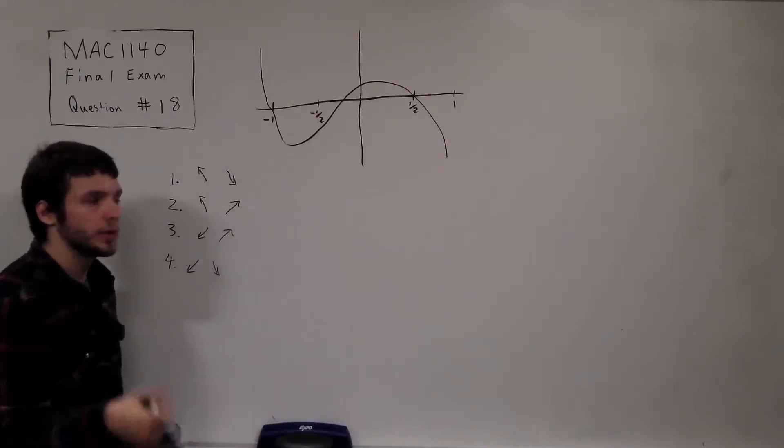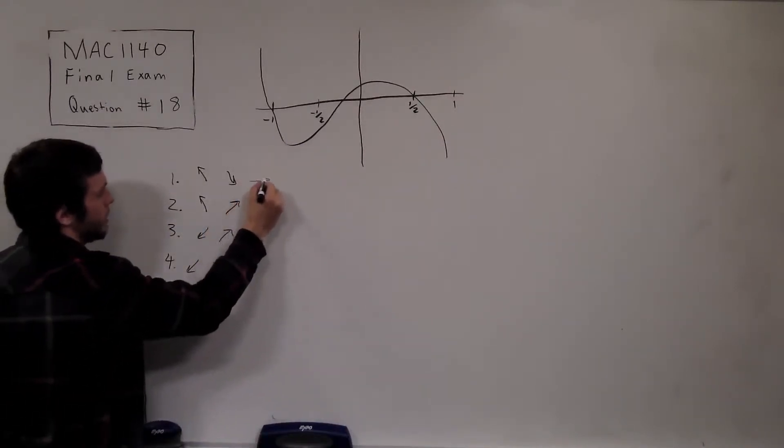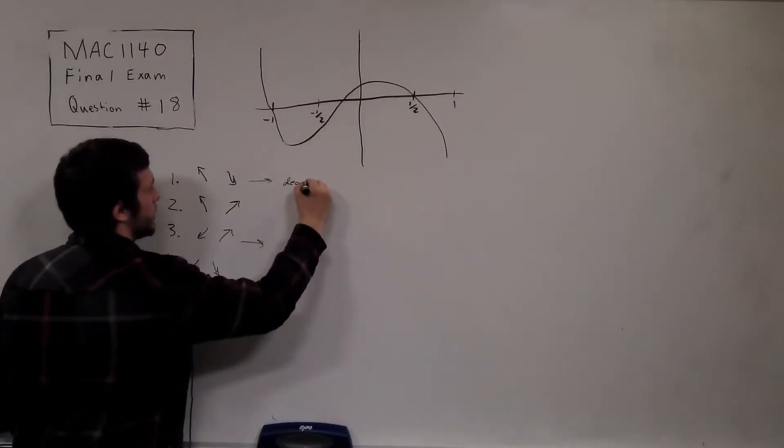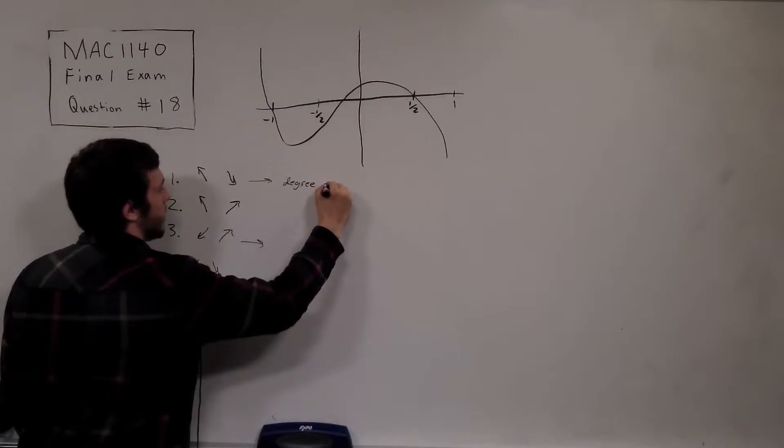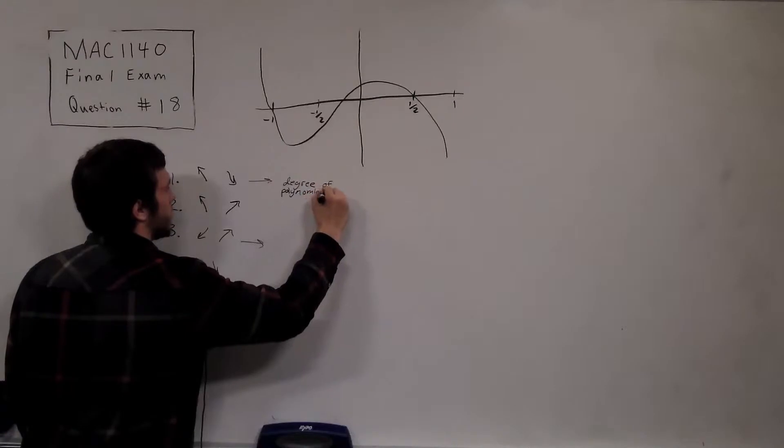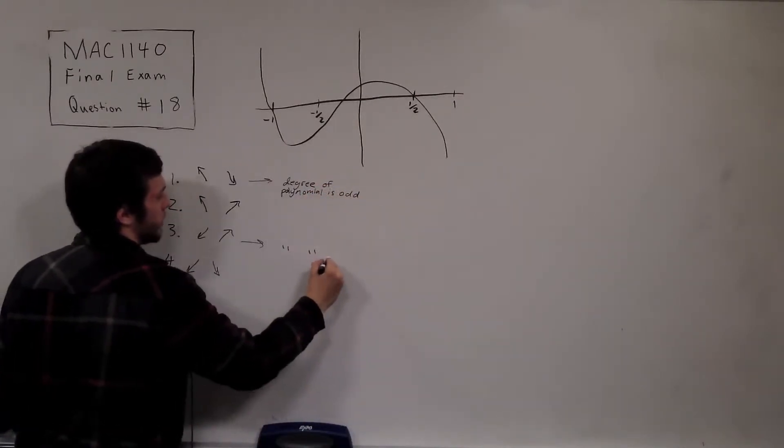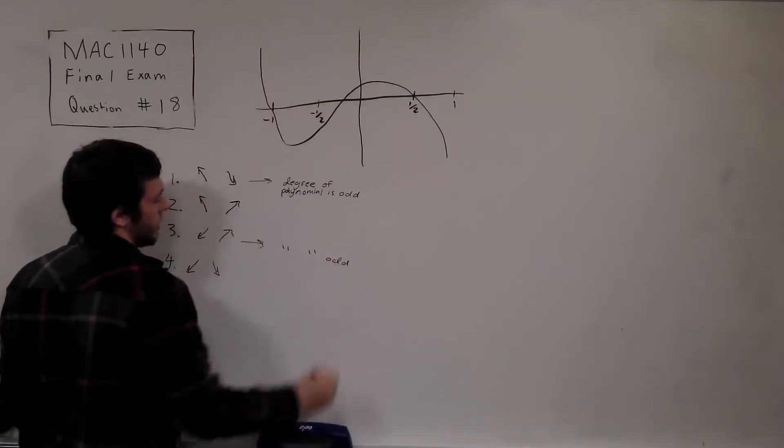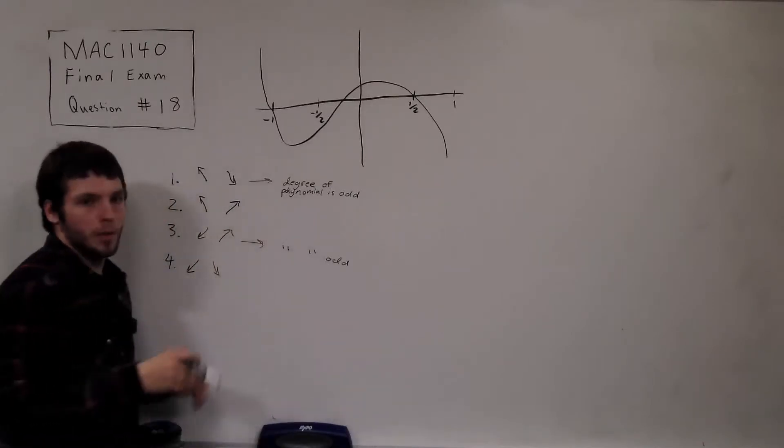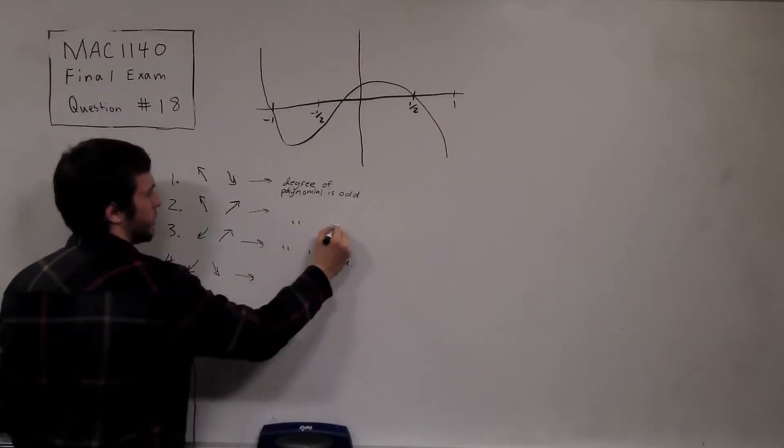That means that the degree of the polynomial is odd. So that corresponds to, so here and here, degree of polynomial is odd. So I'll just write odd. And vice versa, if the two sides do the same thing, i.e. if they both go up or they both go down, then that means the degree of the polynomial is even.